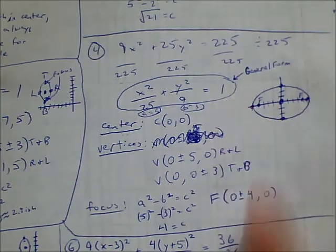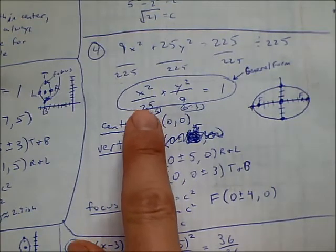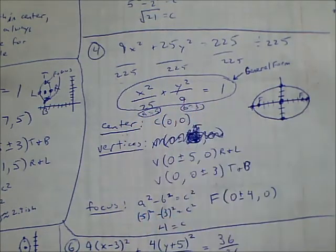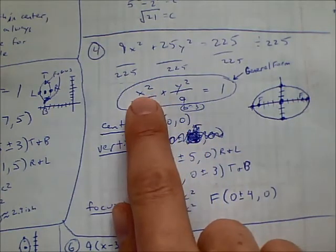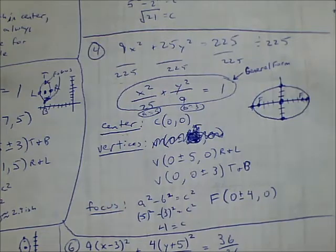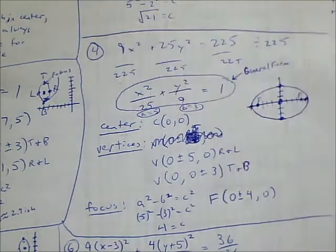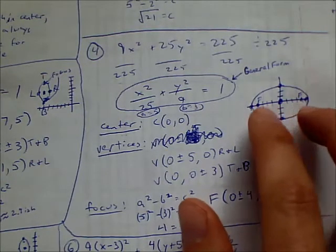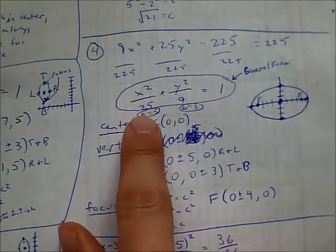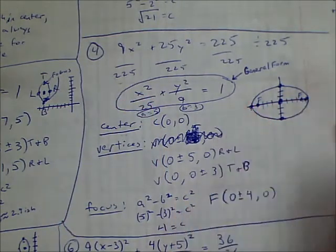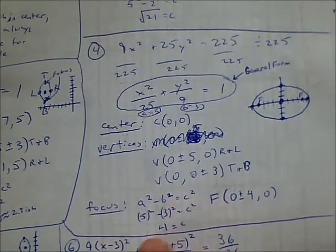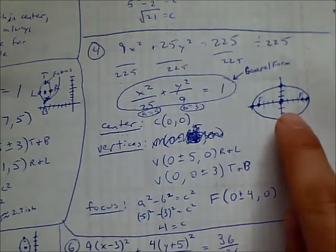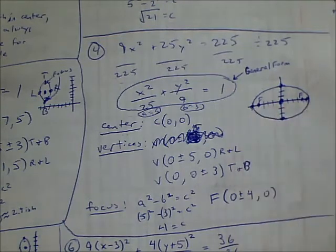We end up with the equation in standard form. The bigger number gives us A — take the square root and get 5. The square root of 9 is 3, which is B. The center is at (0, 0) since there's no horizontal or vertical shift. We count in the major direction — the X direction — left and right 5, and up and down 3 for our vertices. Solving for C: A squared minus B squared equals C squared gives C equals 4, so the foci are 4 units right and left.